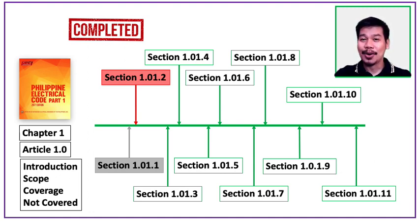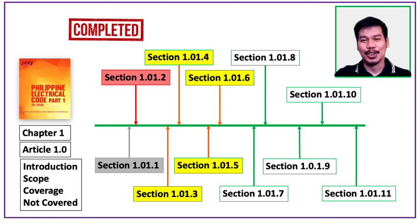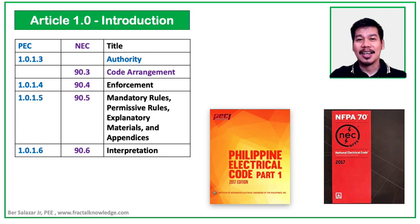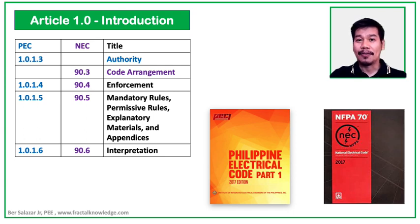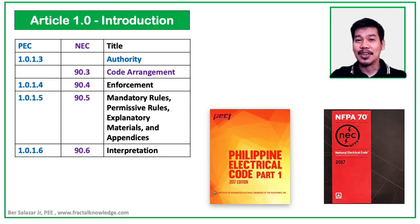Let us see what is in it for us here in Part 3. In this Part 3, we will study four sections, as you can see in the yellow color. The four sections are: PEC Section 1.0-1.3, the authority of the code; Section 1.0-1.4, the enforcement of the code; Section 1.5, rules on mandatory and permissive; and Section 1.0-1.6, the interpretation of the code.